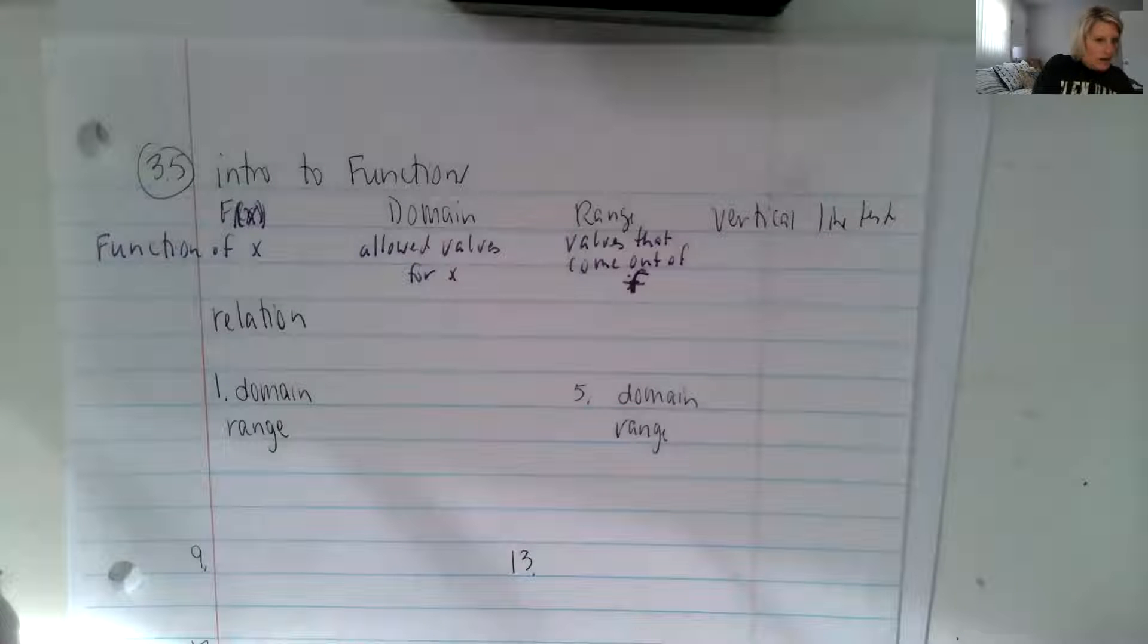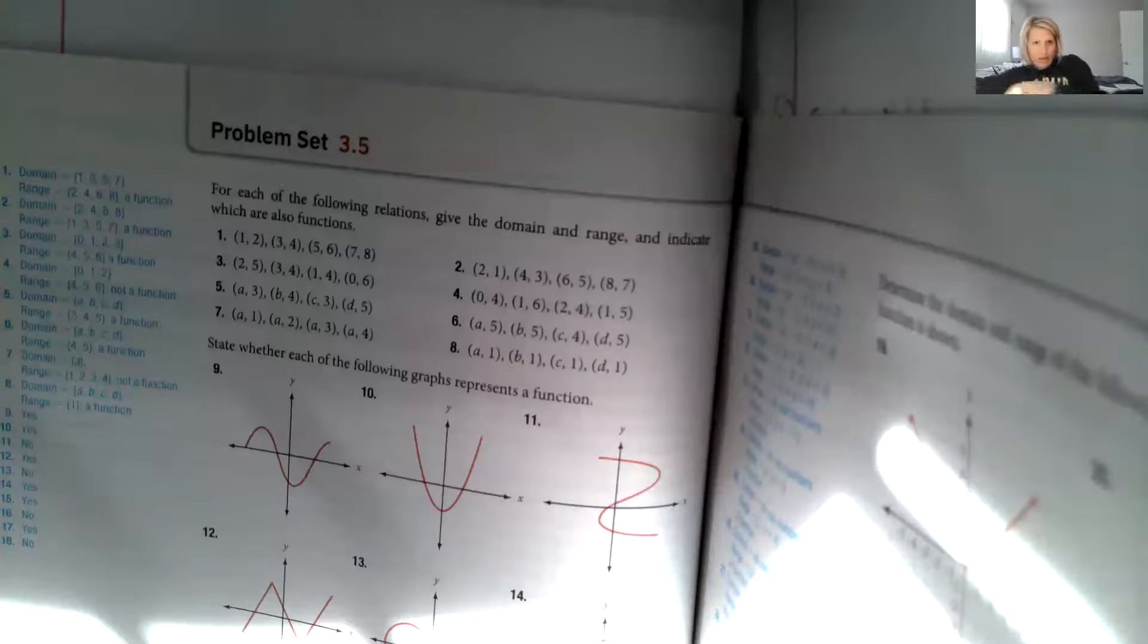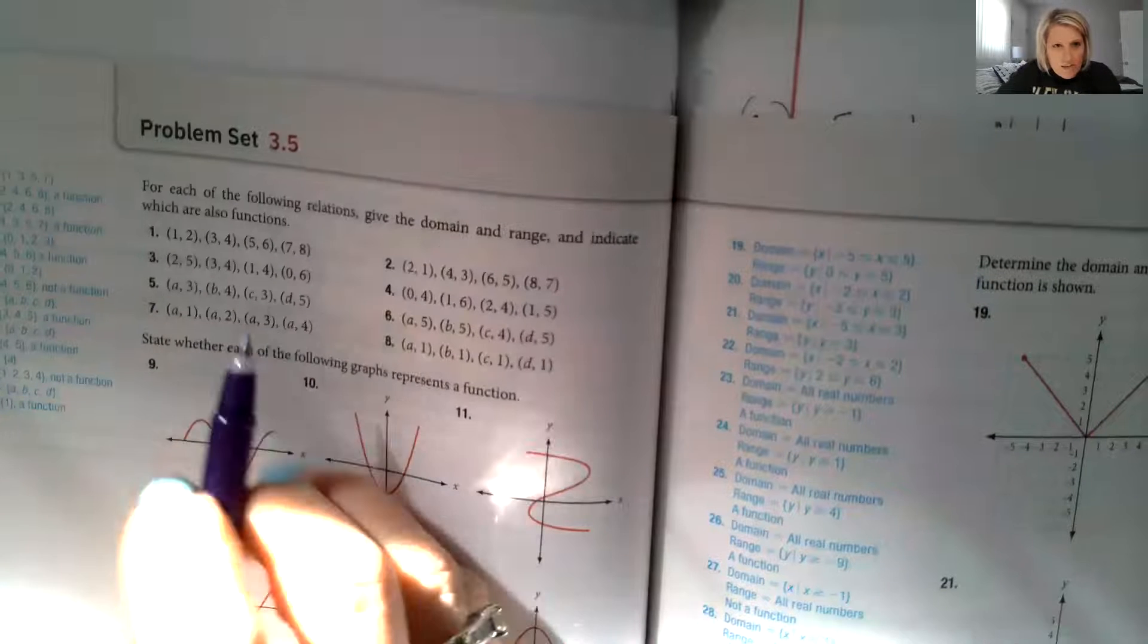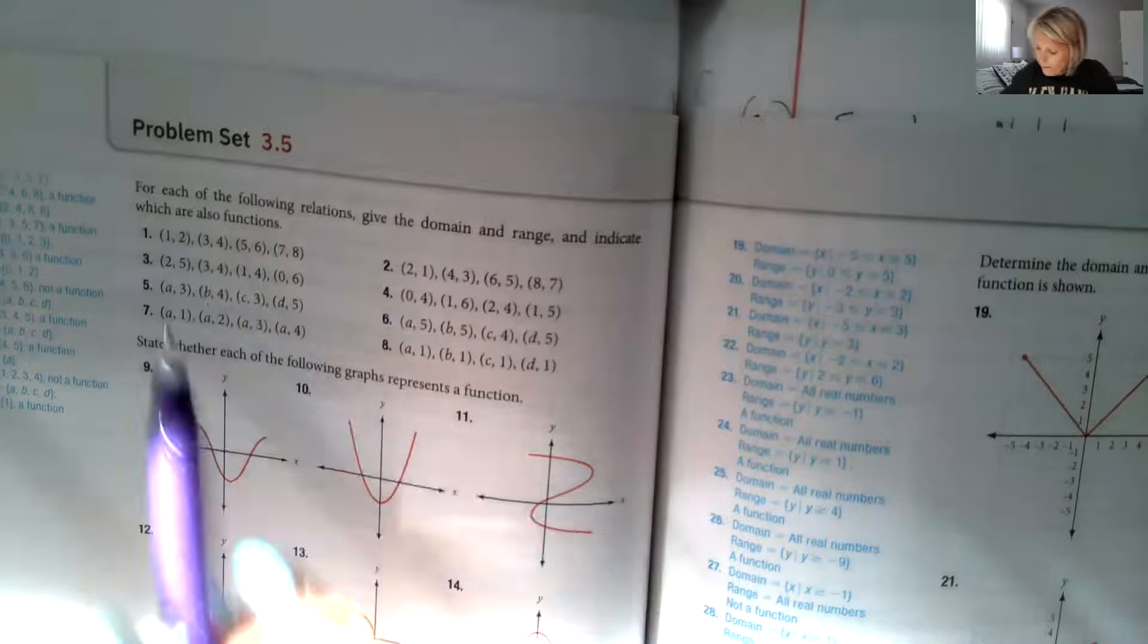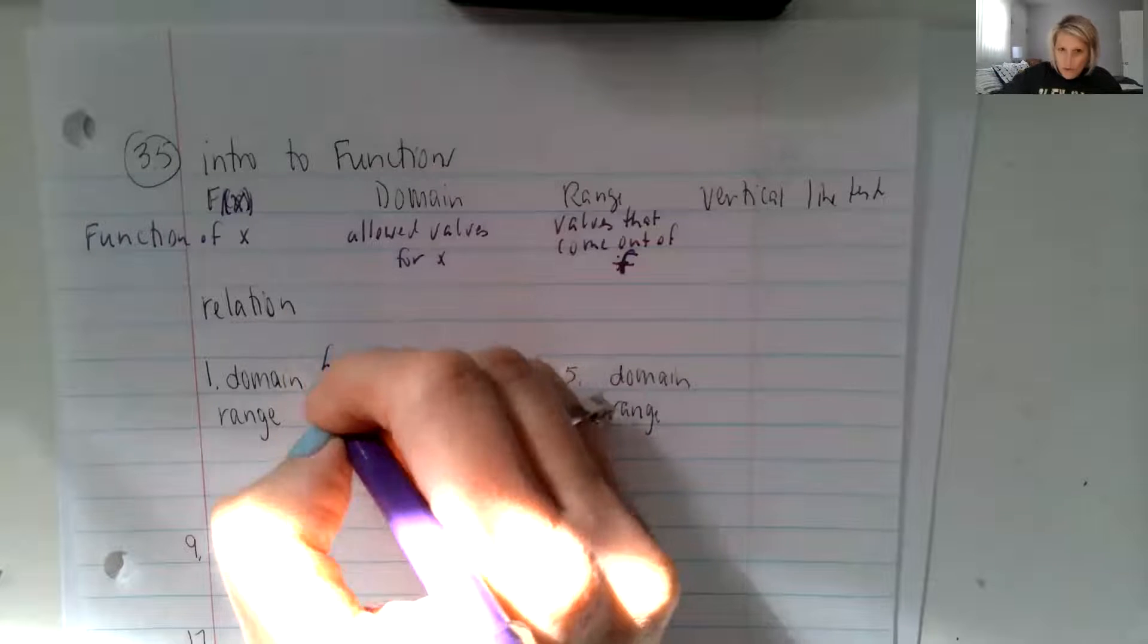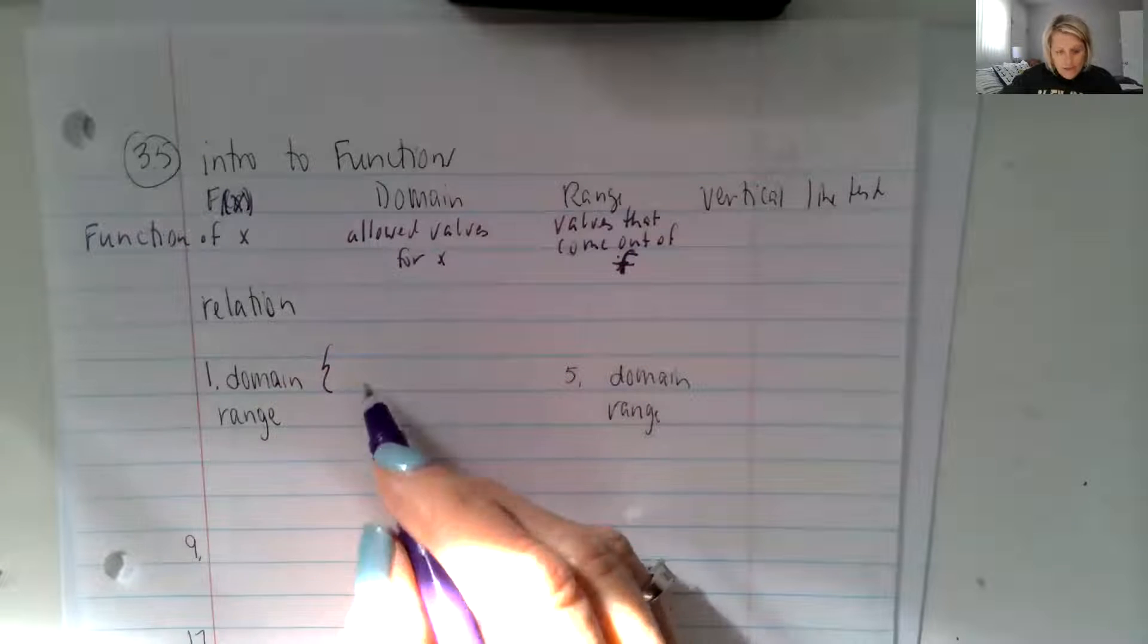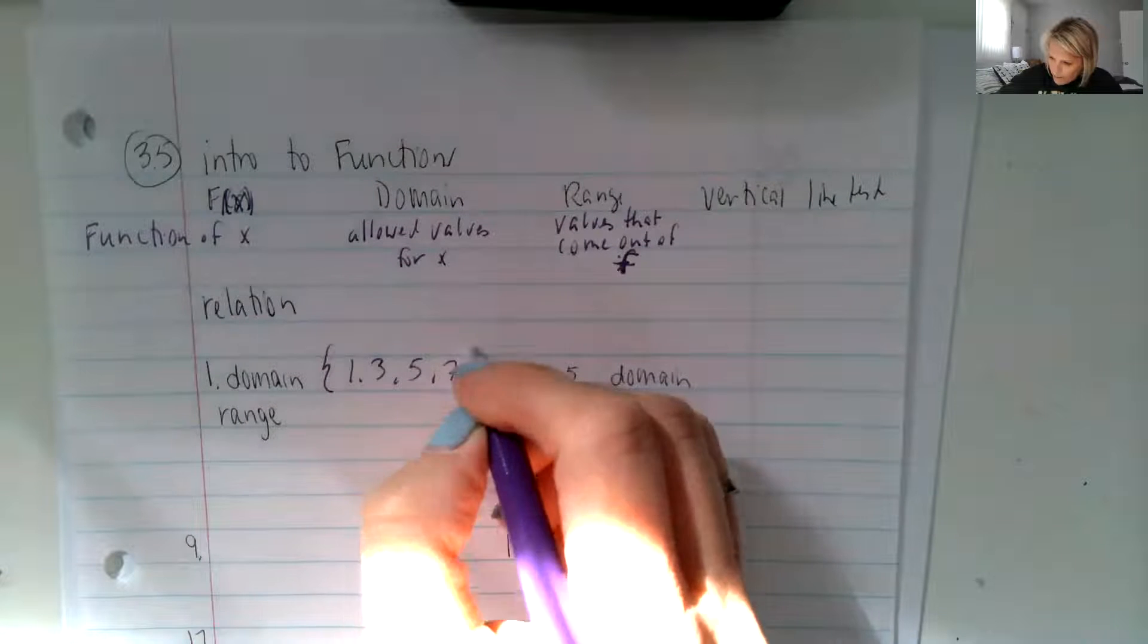So if we go to our problems, our first problem on page 260 is asking us to give each of these following relations, give the domain and range and indicate which are also functions. So on number one, our domain values, we always put them in brackets because that is a set of numbers. So our domain values are one, three, five, and seven.